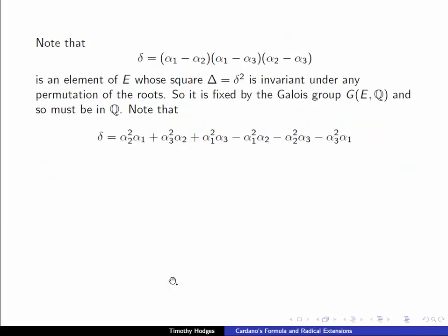So let's start off with δ. Notice that when we square δ we get something, an element of E which is invariant under any permutation of the roots. So it certainly must be fixed by the Galois group and so it must be in ℚ.